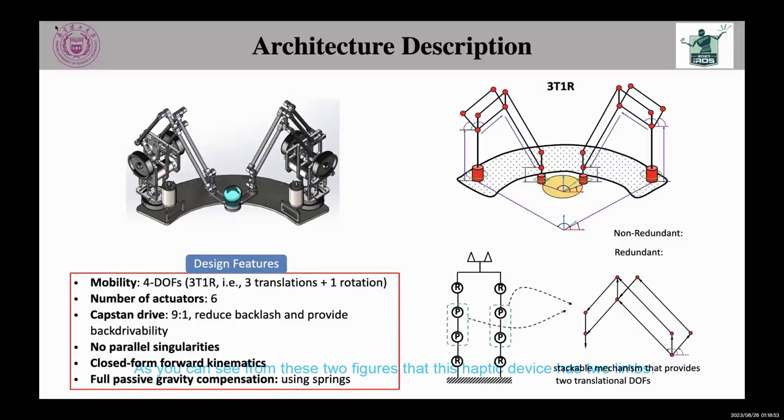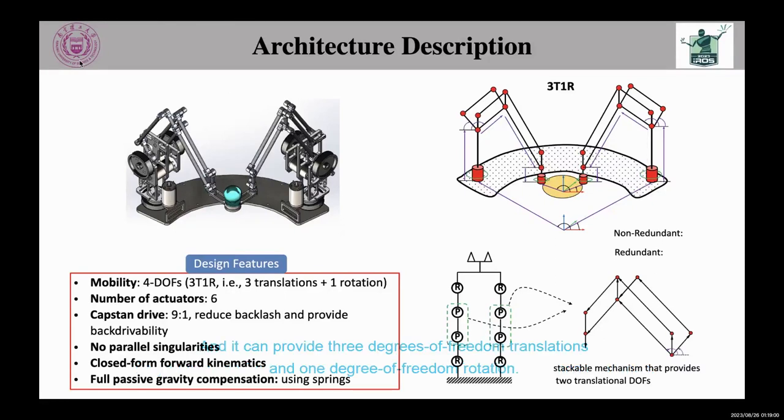As you can see from these figures, this haptic device has two limbs, and it can provide 3 degrees of freedom translation and 1 degree of freedom rotation.